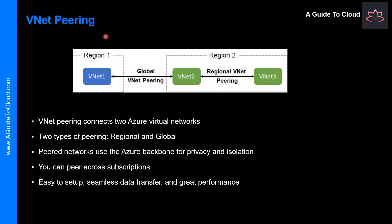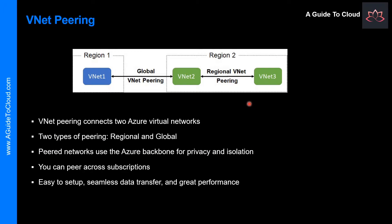We will start with VNet Peering, understand its concepts and benefits, learn about Gateway Transit and Connectivity, how to configure VNet Peering, and Service Chaining. Throughout this video, I will take you back and forth between the presentation and the Azure portal so you understand it thoroughly. Perhaps the simplest and quickest way to connect your VNets is to use VNet Peering. Virtual Network Peering enables you to seamlessly connect Azure Virtual Networks.